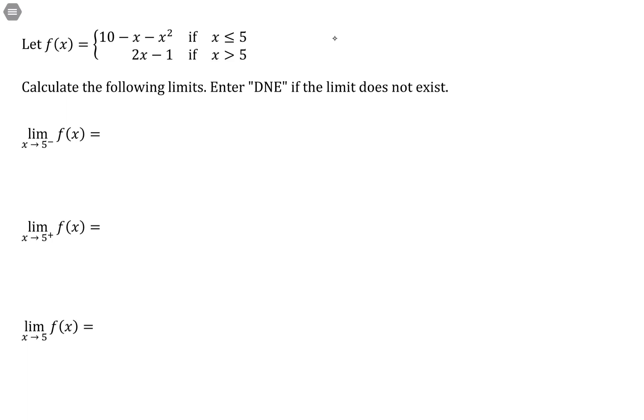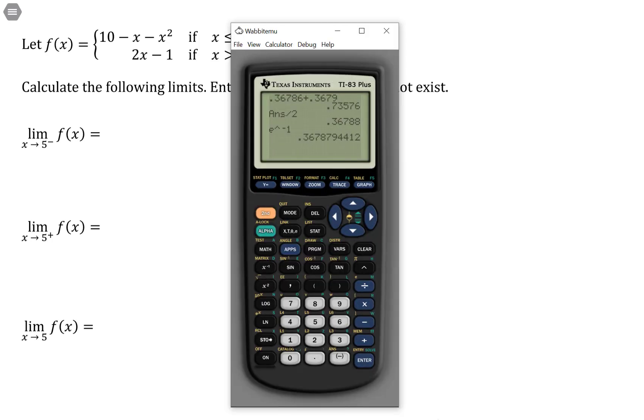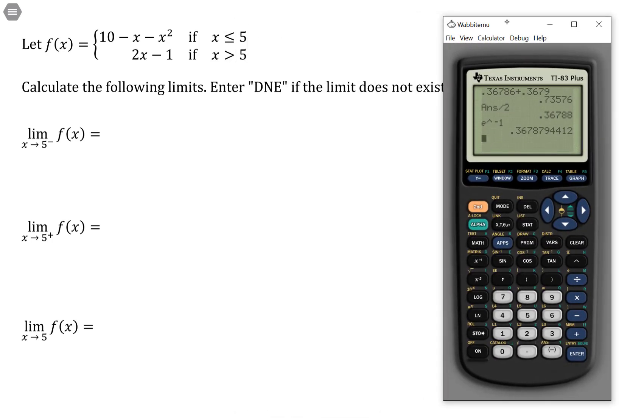So we want the limit as x approaches 5 from the left-hand side. In order to do that, let's set up a table. We'll use the table in the calculator to do this.